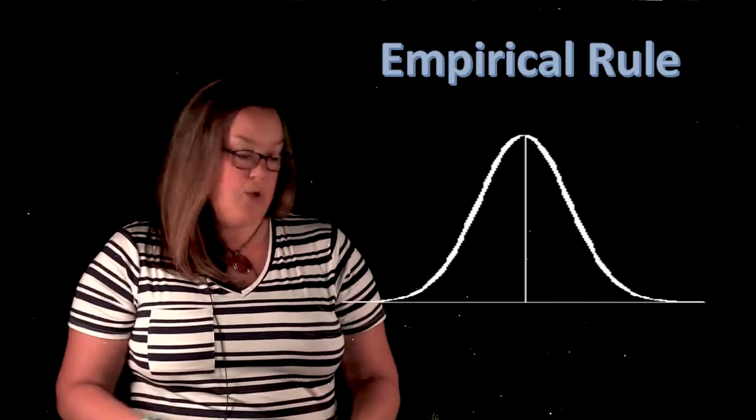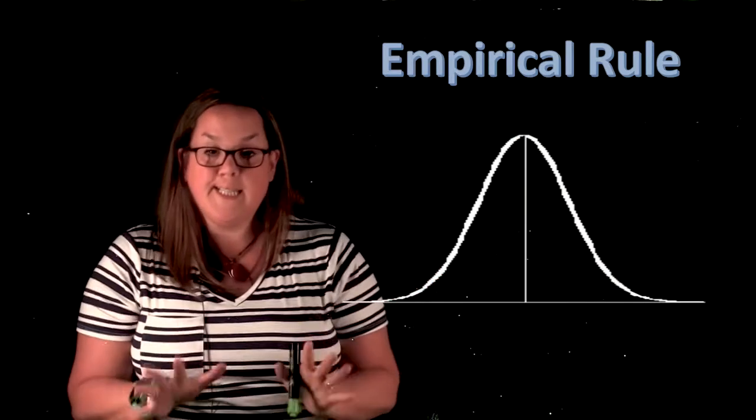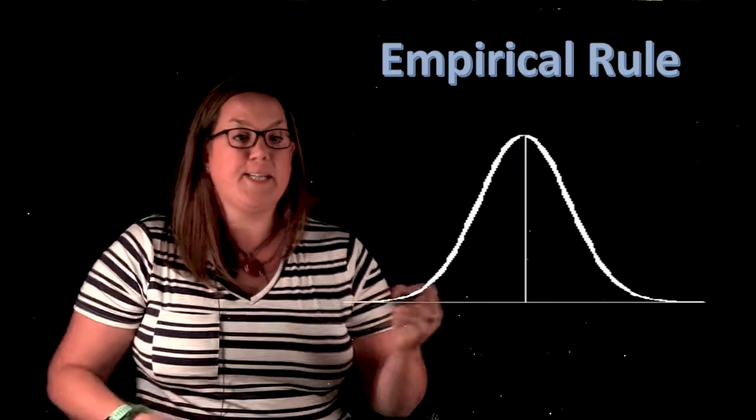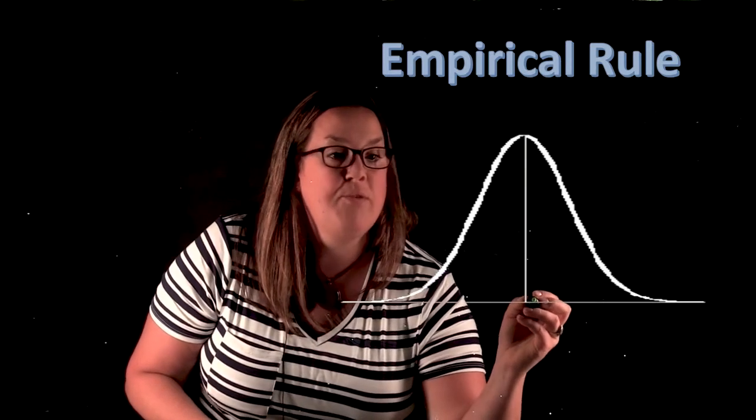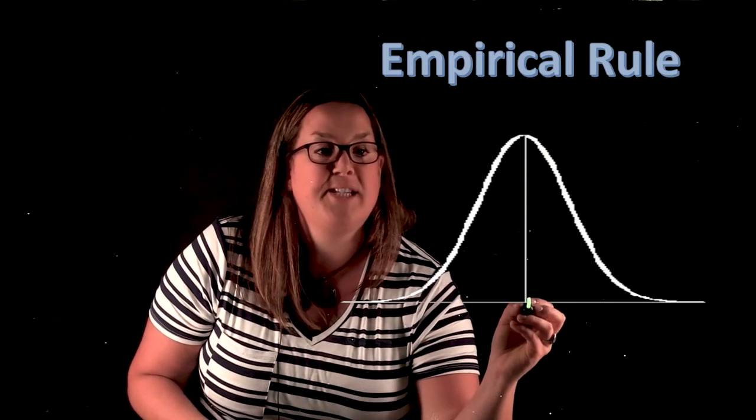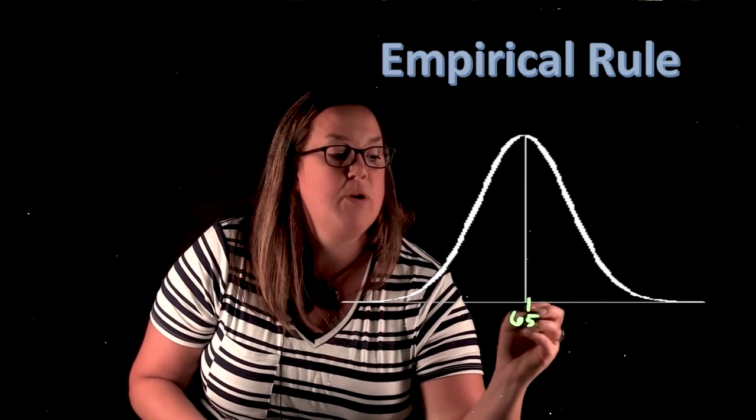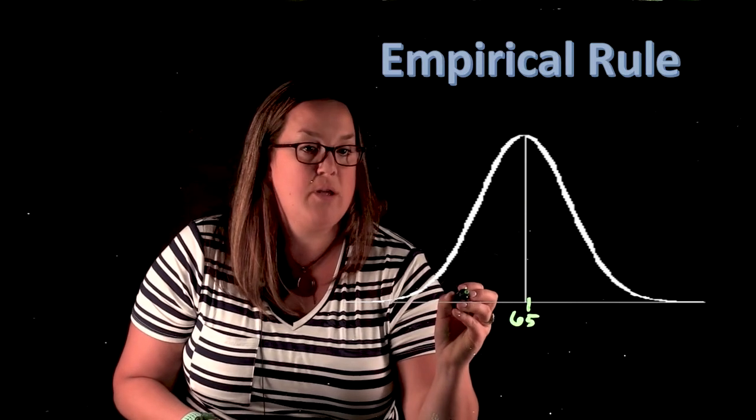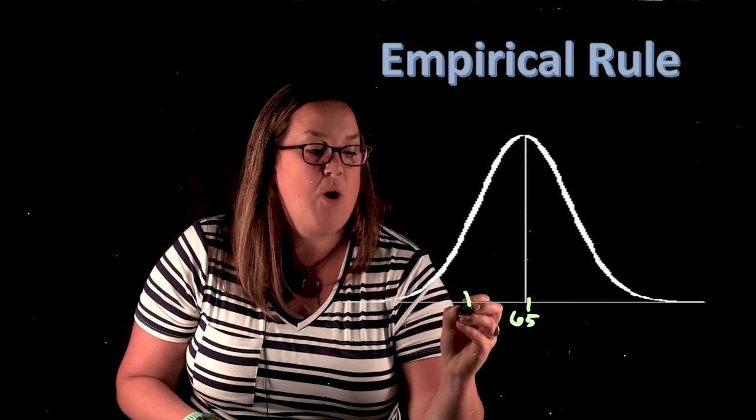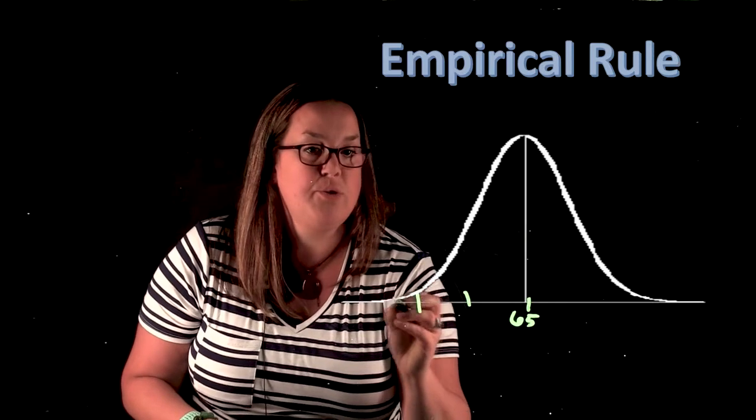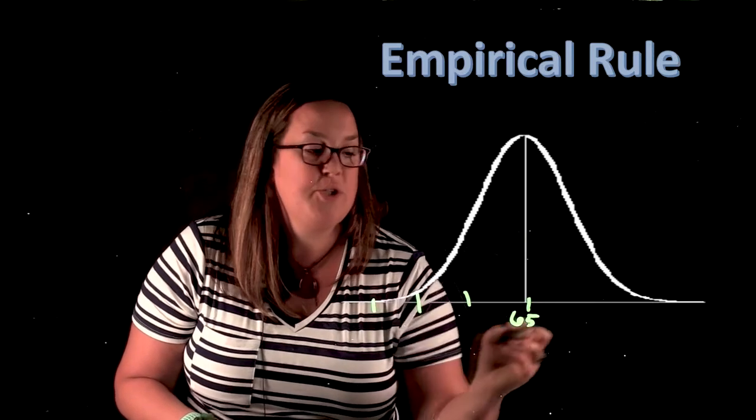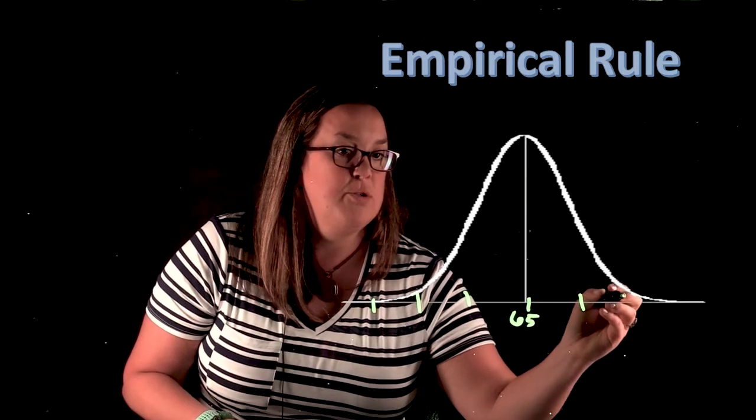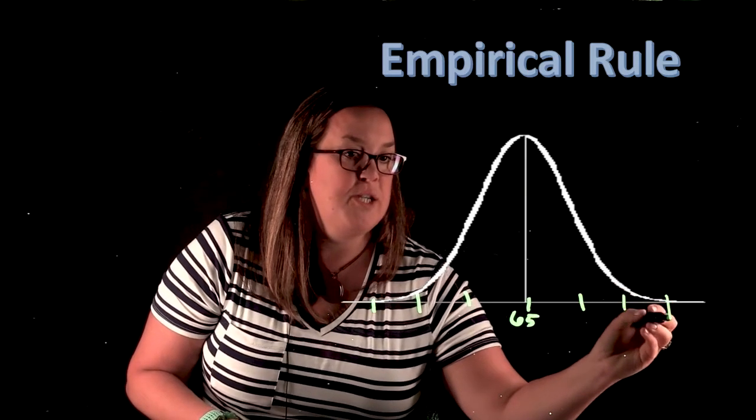So here we have the curve, and it's still going to represent the same type of data—we're talking about female heights. If you remember, the mean for female heights was 65, so that would be located right here. And then we talked about when we looked at the empirical rule generically, how you would go out one, two, three standard deviations in each direction.